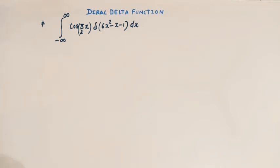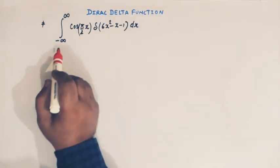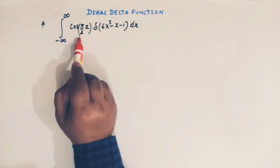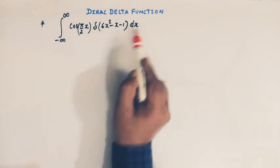Hello viewers. In today's lecture we are going to take up a very important integral involving the Dirac delta function. In our previous videos we have solved many problems related to Dirac delta function. So in this video we will take up this problem: we have to integrate from minus infinity to infinity cos of pi over 2 times x, delta of 6x squared minus x minus 1, dx.